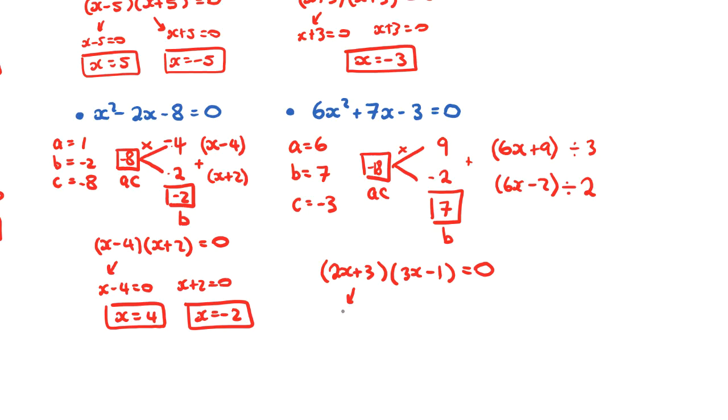Now, from here, we can just use the null factor law to say 2x plus 3 must equal 0, and 3x minus 1 must equal 0. 2x is equal to negative 3, and therefore, x is equal to negative 3 on 2, that first solution, or 3x is equal to 1, and x is equal to 1 third.